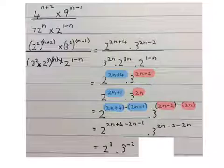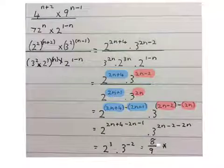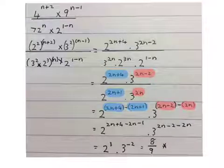Then to write it with a positive exponent, 2 to the power of 3 becomes 8, and 3 to the power of minus 2 becomes a 9 under the line. Final answer, 8 over 9.